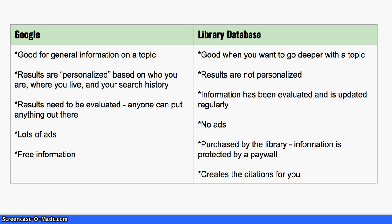With a Google search, the results you retrieve are highly personalized based on who you are, where you live, and your search history. Google is using machine intelligence to track you, whereas with a library database, there is no tracking. The results are not personalized at all.